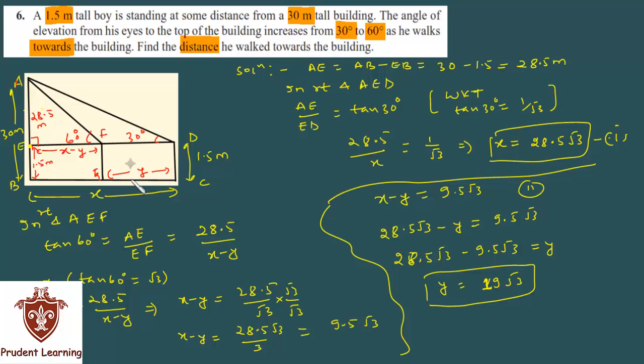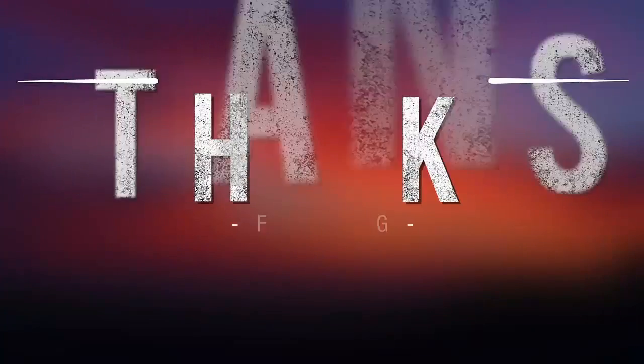And y is what you had to calculate. What distance did the boy travel towards the building? Finally, your answer is: Hence, the distance walked by the boy towards the building is 19 root 3 meters. You should write the unit as well. This is our answer. So this completes our solution. I hope you understood, otherwise watch the video again. Let's move to the next question. Thank you.